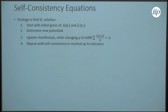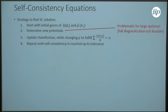Now, how do we solve our self-consistency problem? We want to solve it iteratively. We start from initial guesses for delta and µ-tilde, then determine the new potentials, and update our Hamiltonian while always adjusting our chemical potential so that the particle density is kept fixed. We repeat this until self-consistency is reached up to some tolerance. The second step is problematic if we want to calculate large systems — conventionally we would fully diagonalize our Hamiltonian, but this is no longer feasible for large systems.